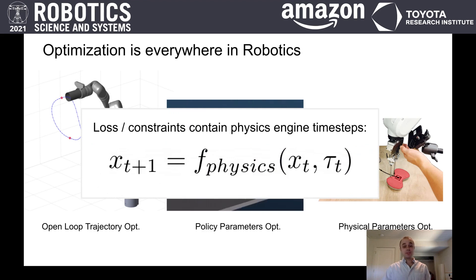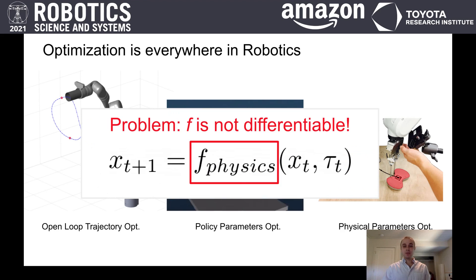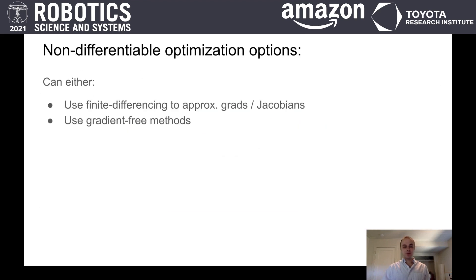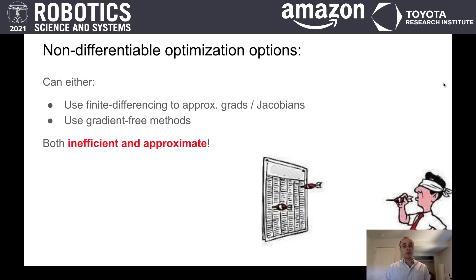The trouble is the physics engines that are rich enough to simulate real robots tend to also be non-differentiable. That means we often either resort to gradient-free optimization methods to solve our problems, or we approximate gradients and Jacobians using finite differencing. Both of these methods are slow and noisy.